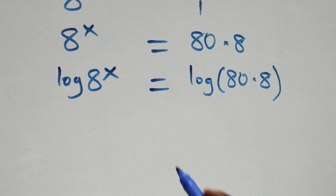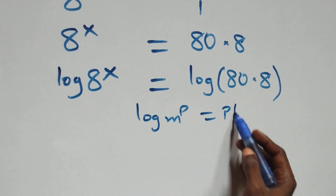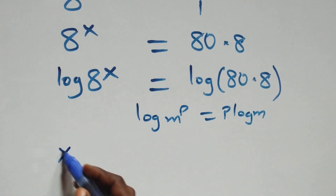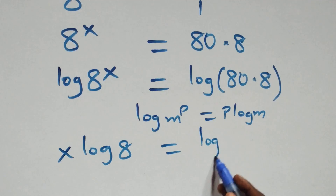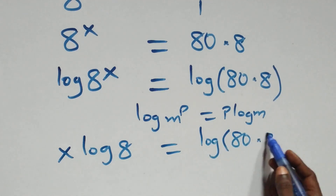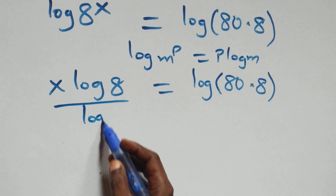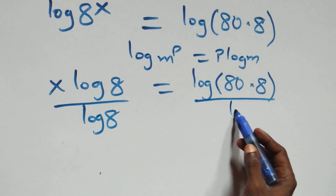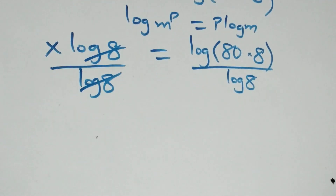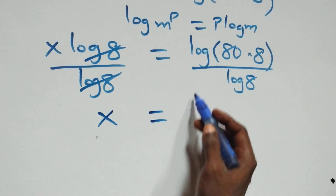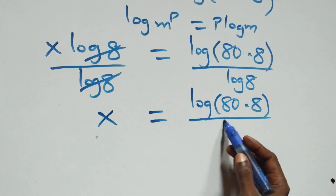The next step, we apply the power rule of logarithms: log m raised to power p is the same as p·log m. So here we have x·log 8 equals log(80 × 8). Then we divide both sides by log 8 — log 8 cancels on the left — and we have x equals log(80 × 8) over log 8.